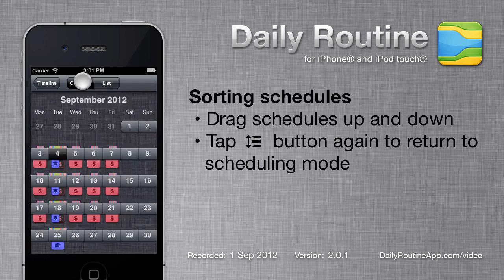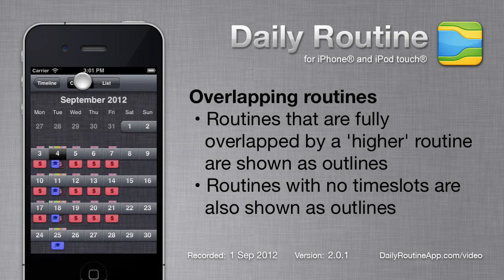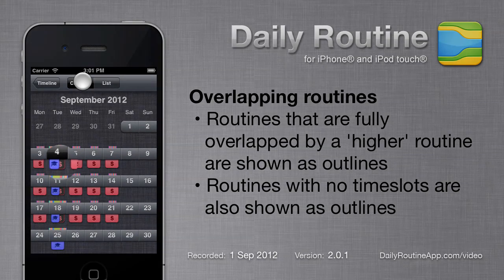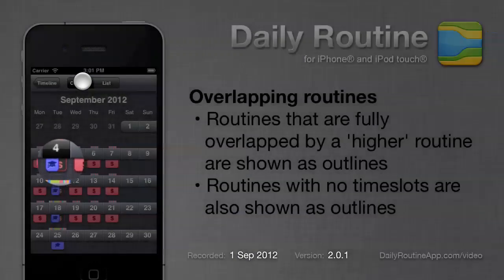On the calendar we can see that the order of routines in the overlap days has changed. In cases where one routine fully overlaps another, the overlapped routine is shown as an outline.